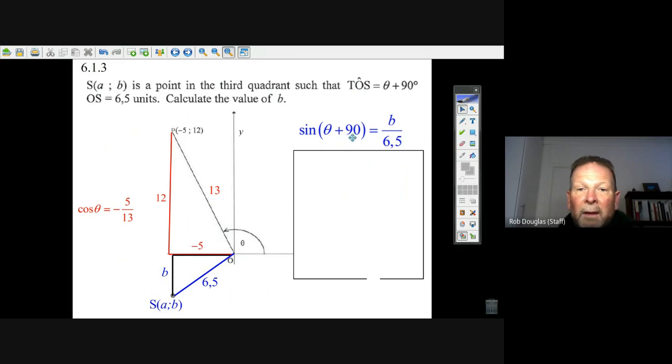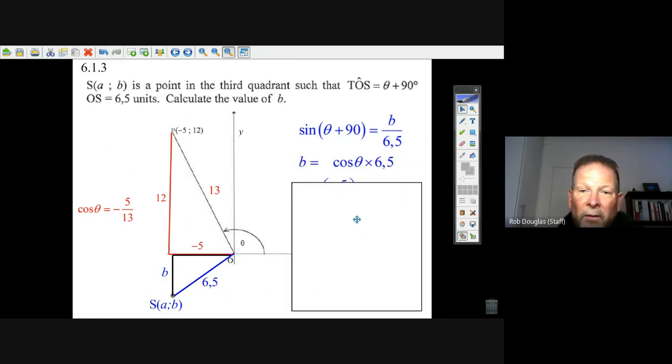Because the sine of theta plus 90 is really equal to the negative cosine of theta. It's a negative number, cosine of theta, and hey, we already know that. We know that cosine theta is minus, so we solve, we multiply by 6.5.